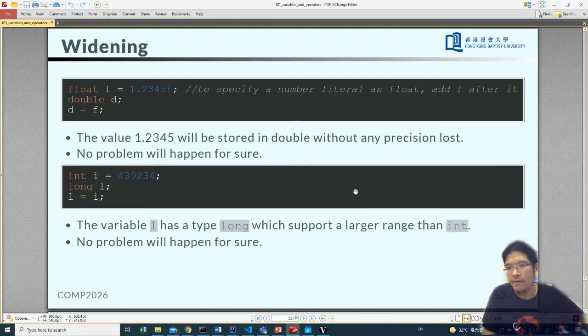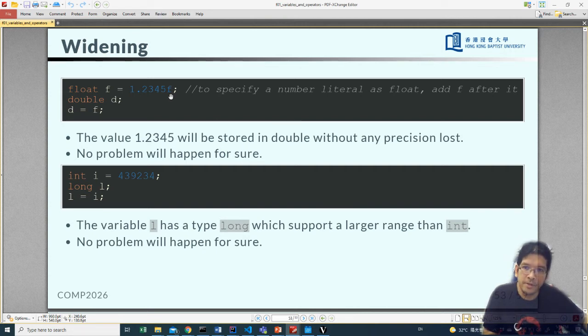Widening: so let's say if this 1.2345 is a float and we want to assign it to a double. You can simply write this one. That will be perfectly fine. We're assigning the number d, holding the value 1.2345 with double precision. There will be no problem for sure. And similarly for this one, integer that's holding 439234, and we want to assign this number to long, where long has more space to host this one. There will be no problem, and the program will just compile.